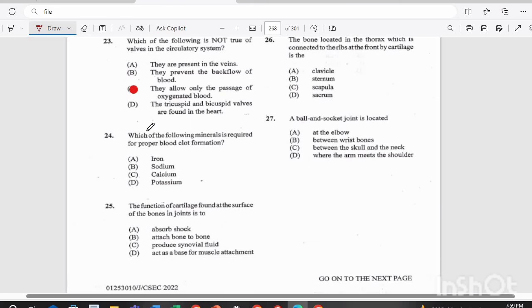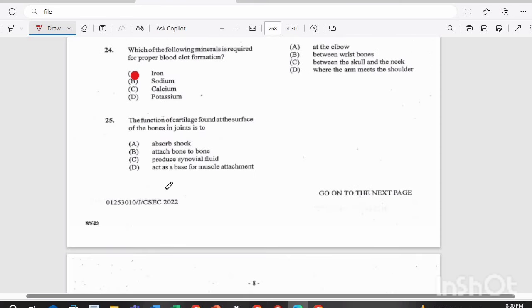Question 24. Which of the following minerals is required for proper blood clot formation? Is it A, iron, B, sodium, C, calcium, or D, potassium? The answer there is A, iron.